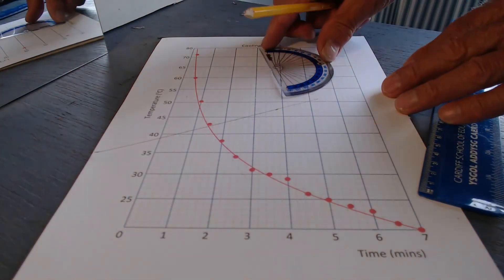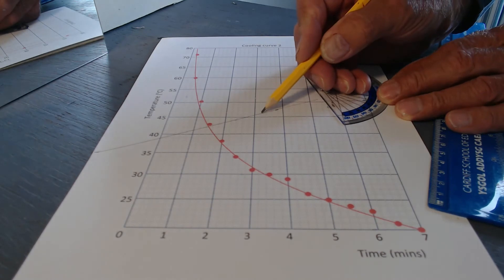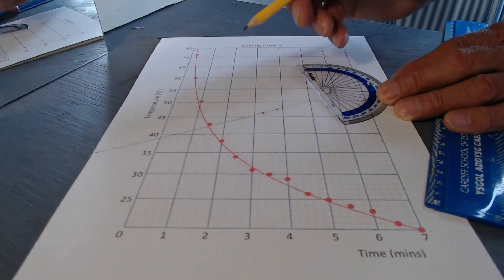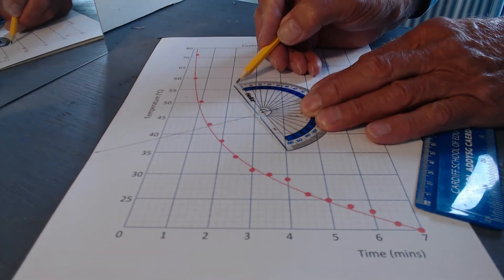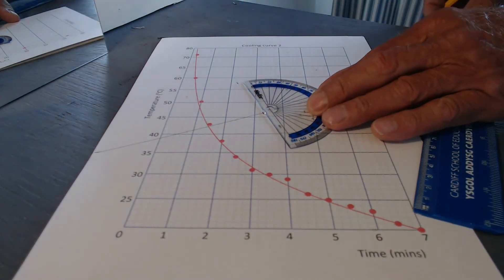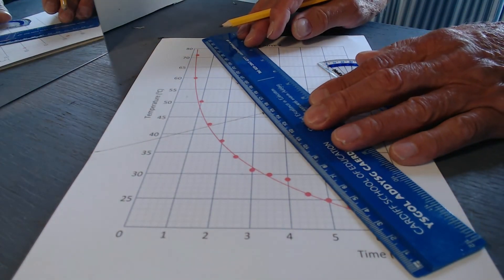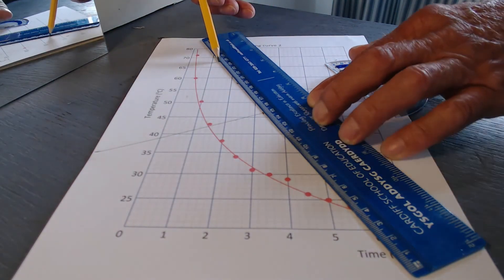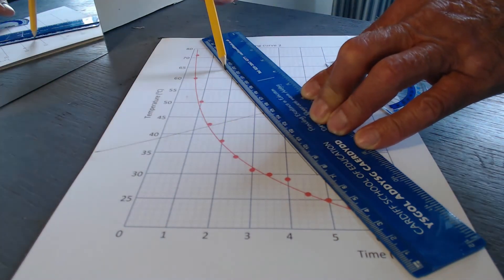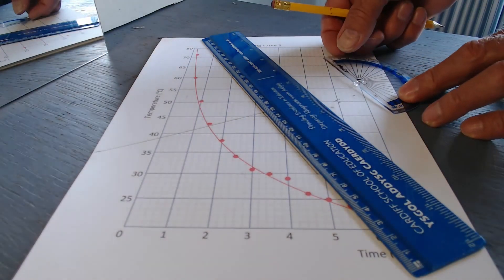Now with the protractor, and you can do this at any point along the line. If I make the point here, I will be able to draw a line like this. Now you can see that that line is going to be at right angles to this one. And therefore, this line here is going to be a line which is tangential to the curve.